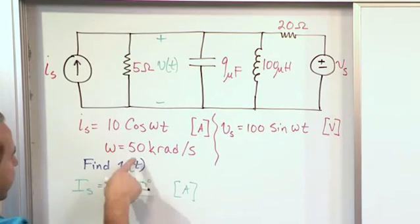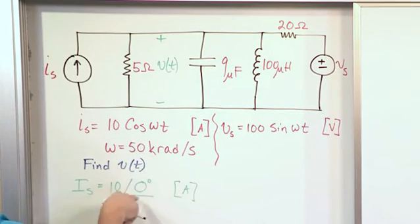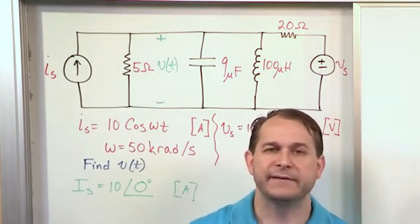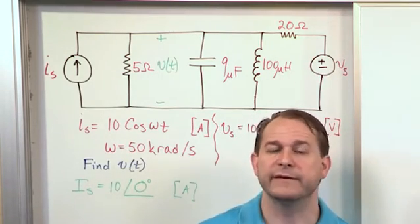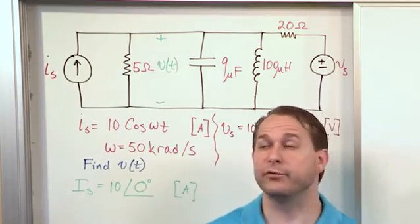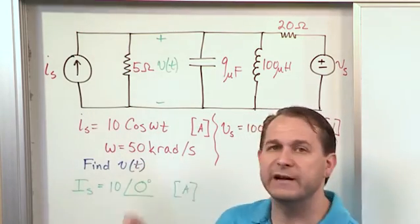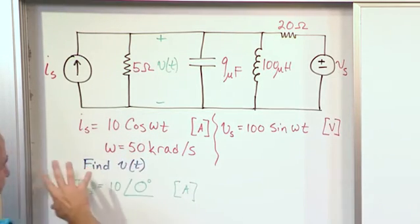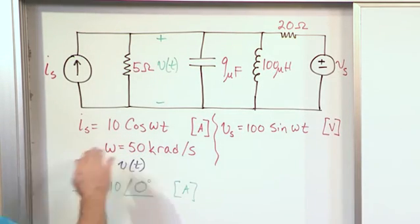There's no frequency written down here. The 50,000 kilorads per second, we don't use that information when we write the phasor. The math is the same irrespective of the frequency. We just use the frequency at the end of the problem to reconstruct this voltage as a function of time. We have to put the proper frequency back in. But for now, we're essentially ignoring, for at least for this first part, we're ignoring the frequency.